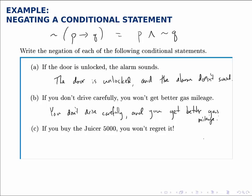And finally, for part C, if you buy the juicer 5000, that will be P. And you won't regret it. The negation of that is you do regret it.